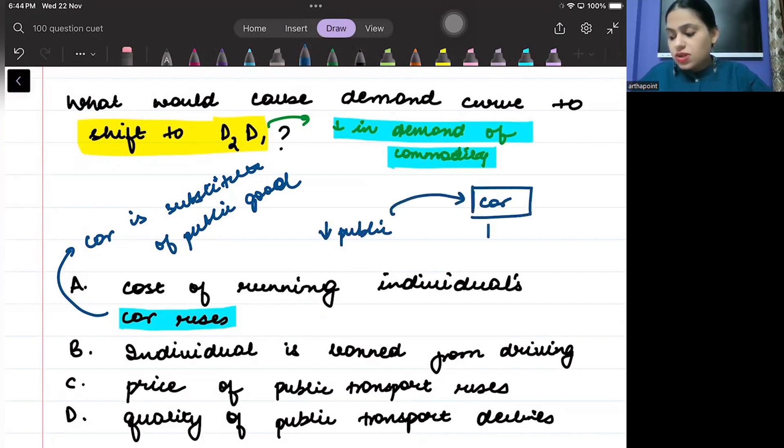But is it reducing? No. The cost is increasing. If cost of using a car increases, will you use cars? No. You will use public transport. Then the demand of public transport should increase. But the demand of public transport is decreasing. So, this is incorrect.